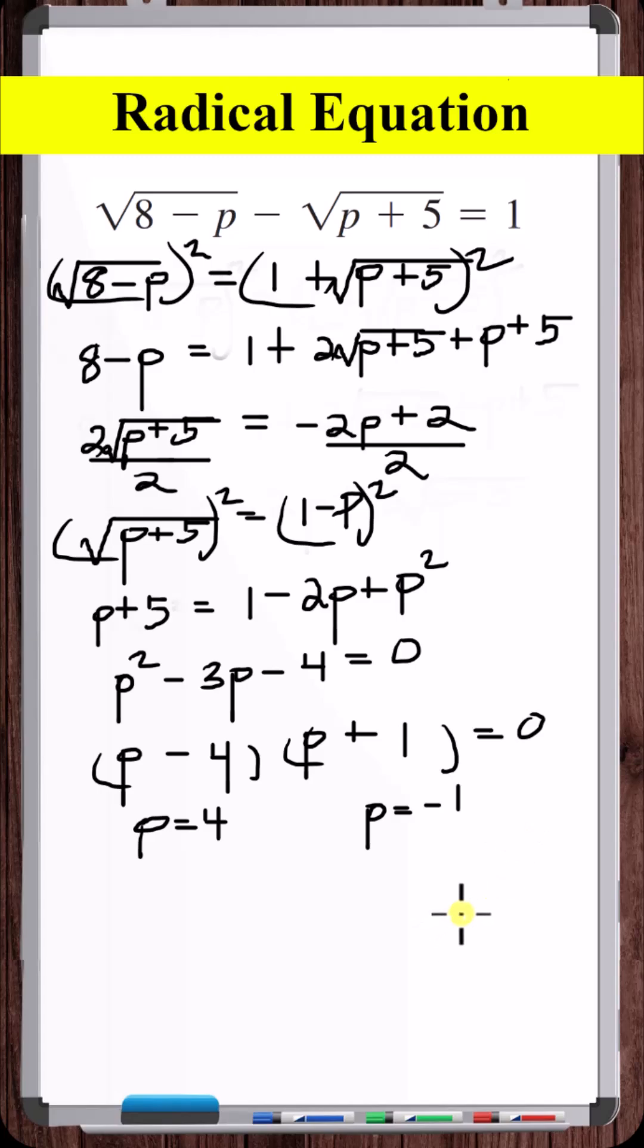But we need to check these answers because we could have extraneous solutions. So, let's plug p is equal to 4 into the original equation. So, p is equal to 4 is not a solution.